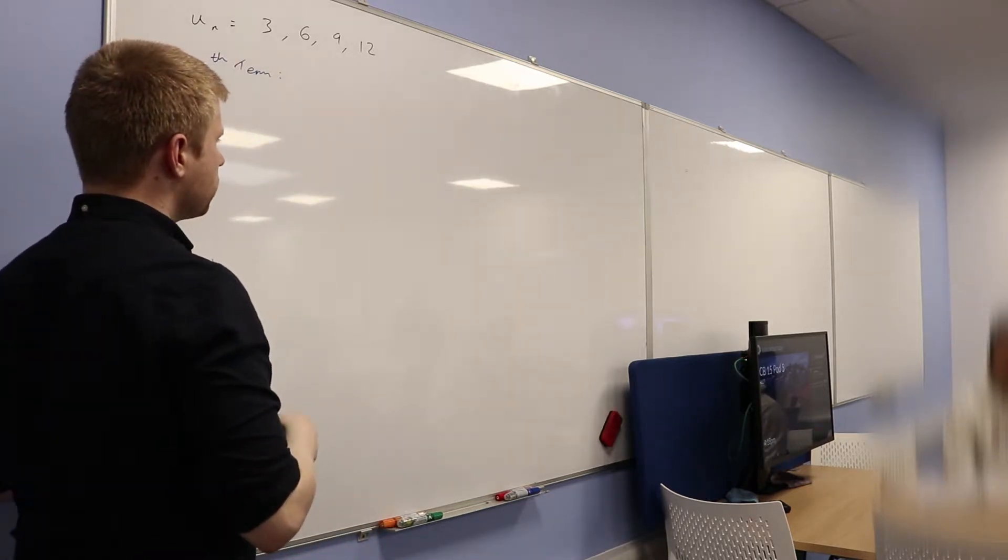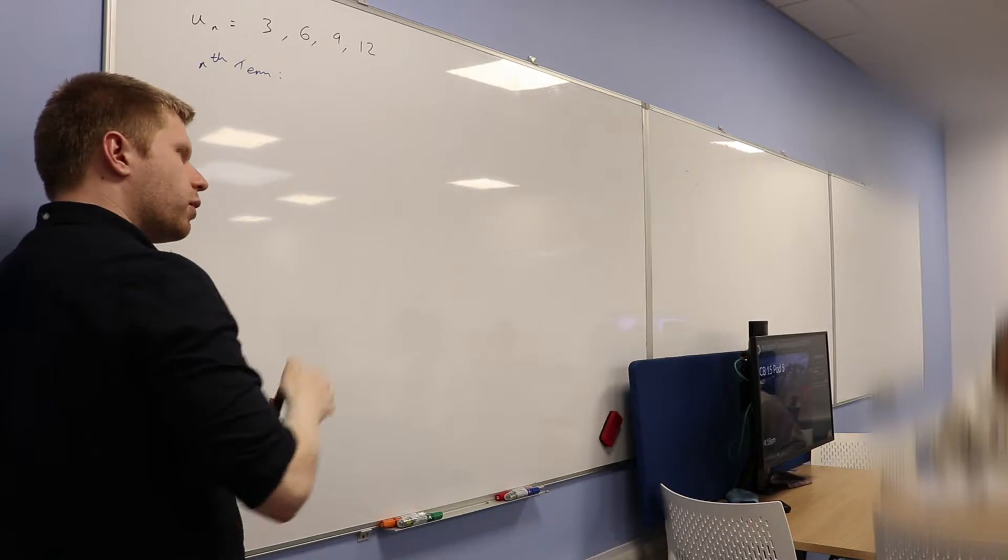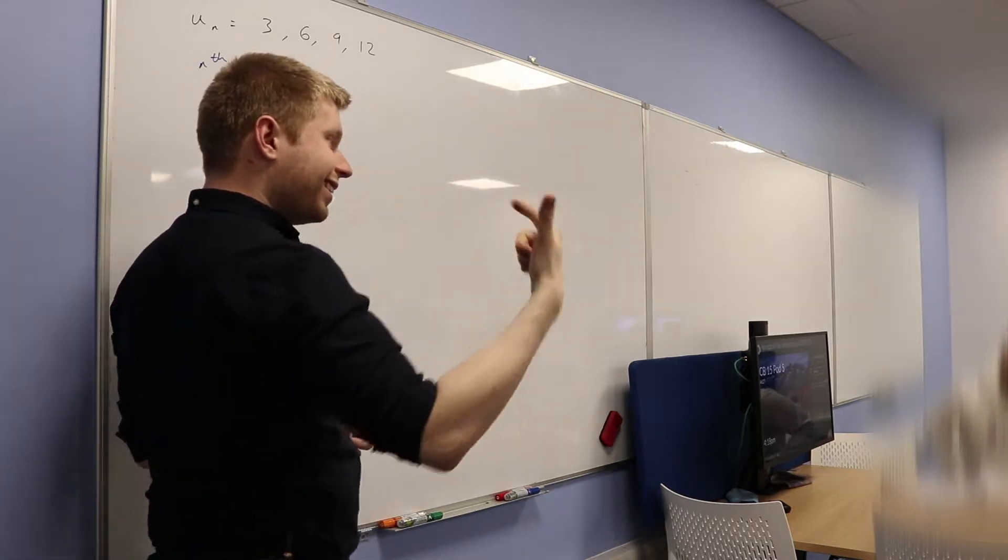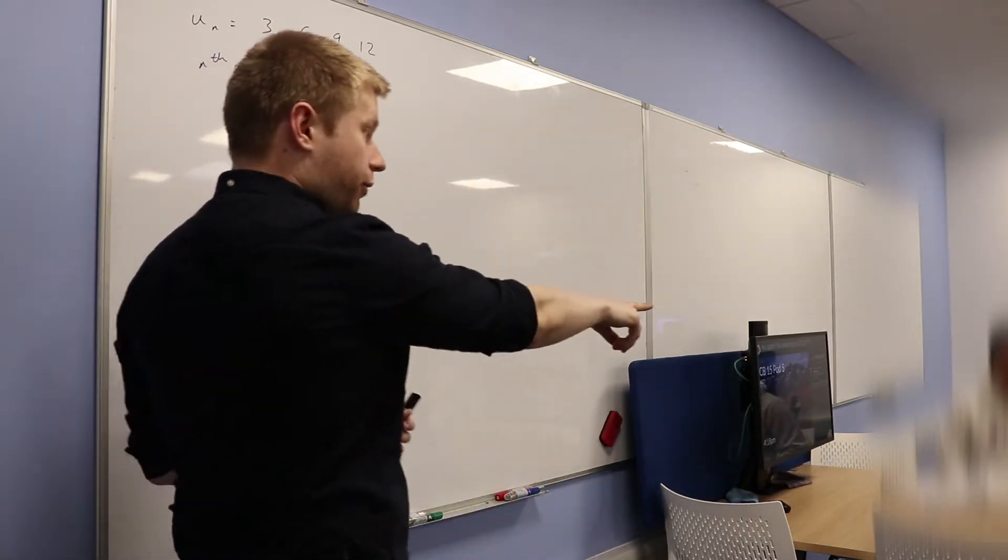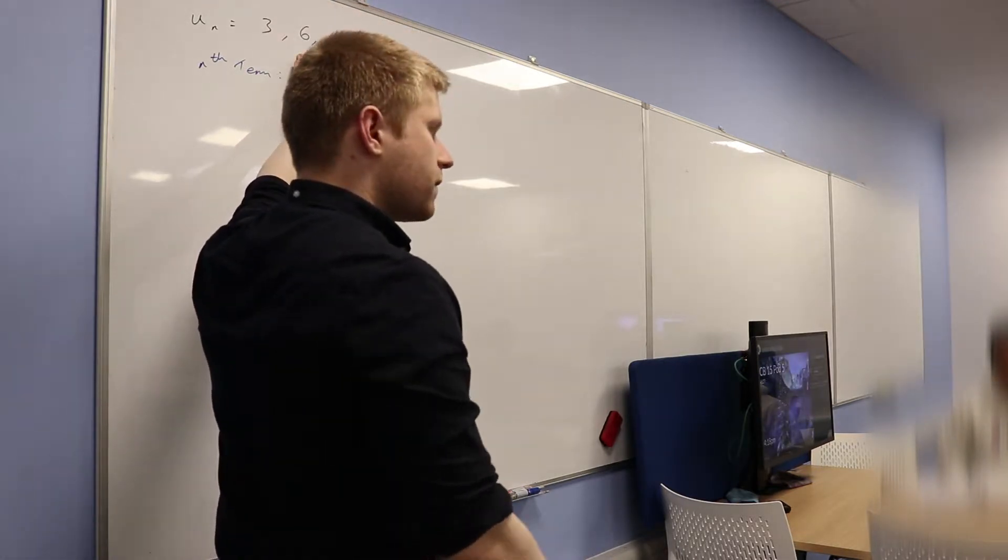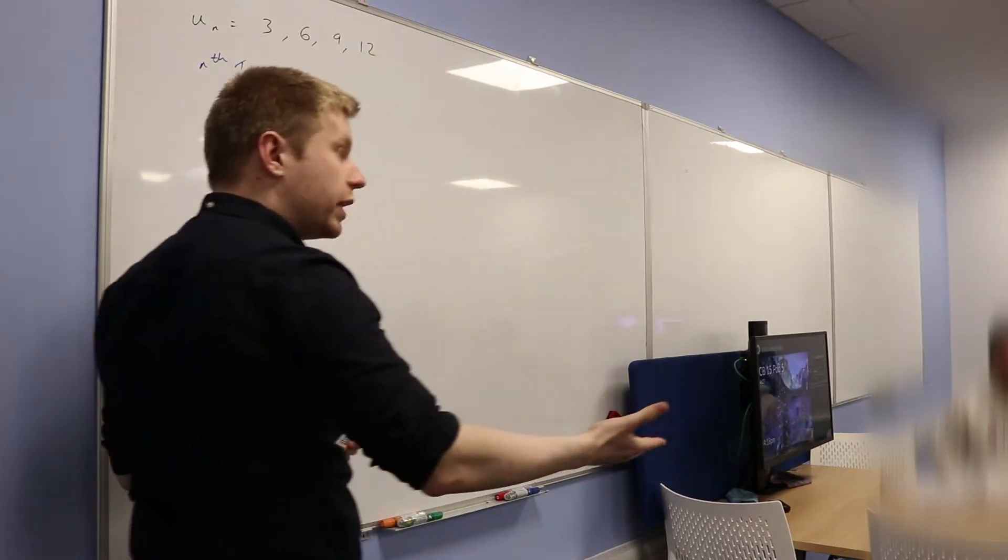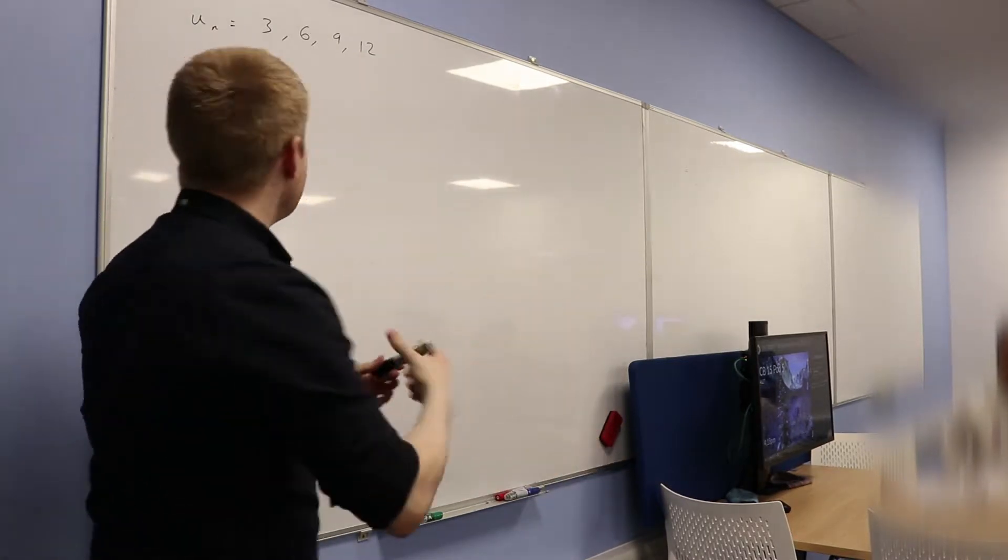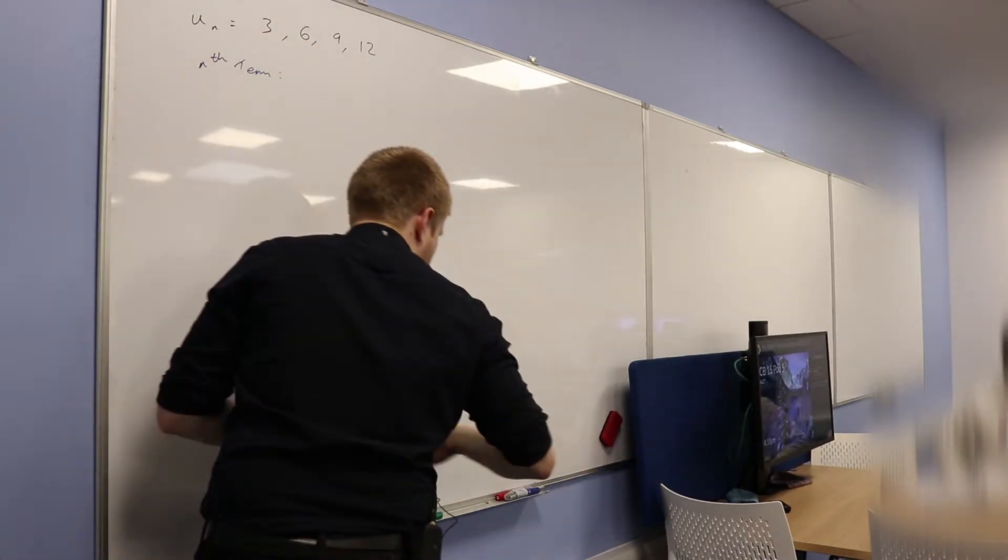3 to the power of n? Well, 3 to the power of n would go 3, 9, 27, very different, right? What do I mean here? Yeah, good, just 3 times n, isn't it? It's just the 3 times table. So I could write this as 3n.